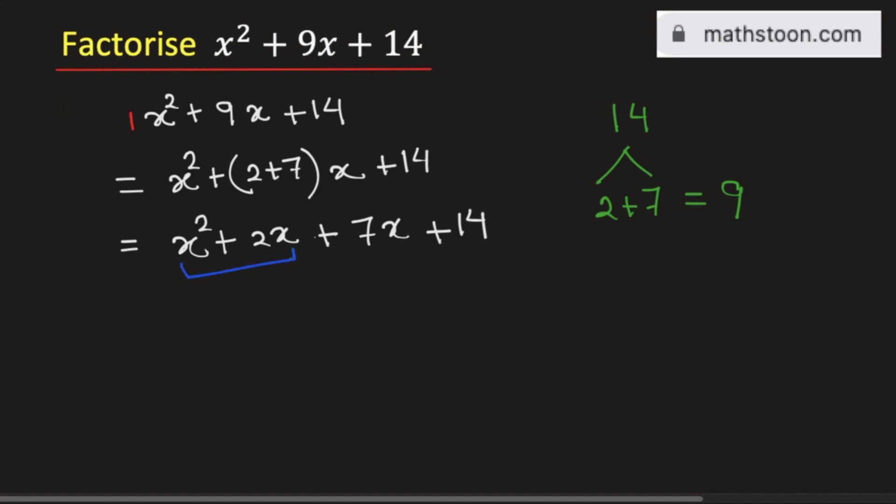From the first two terms we will consider x as a common factor and from the last two terms we will consider 7 as a common factor. Then this can be written as x times x plus 2 plus 7 times x plus 2.